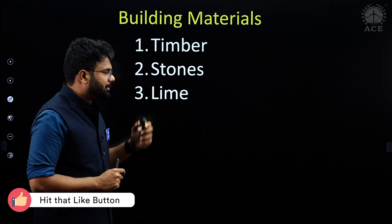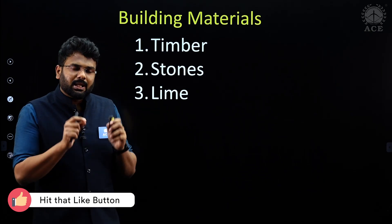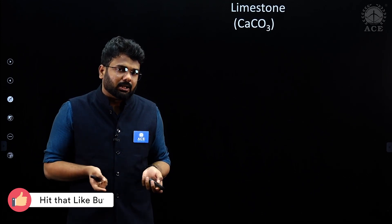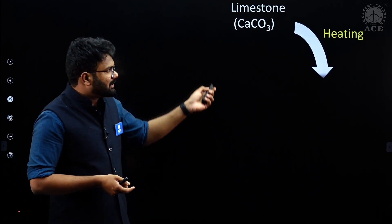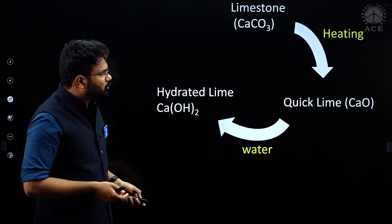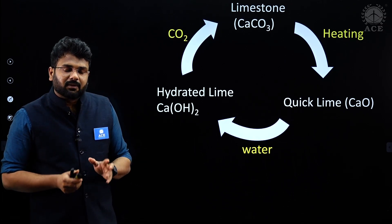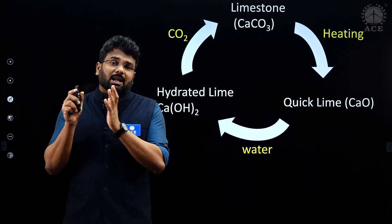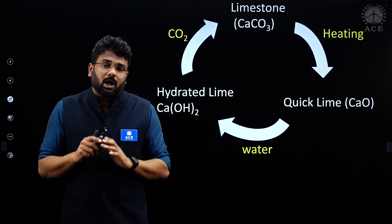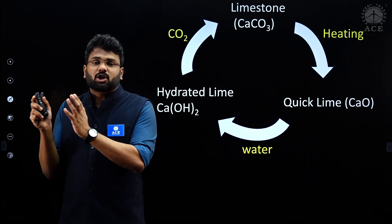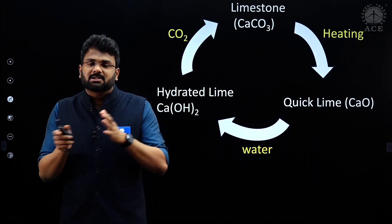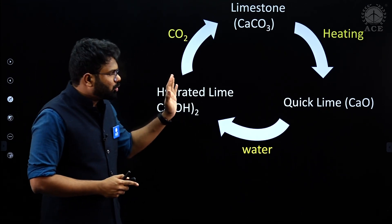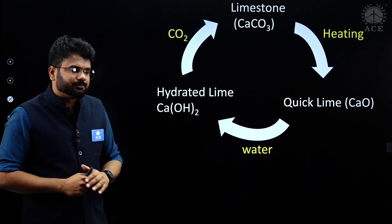After that is the lime chapter. In the lime chapter you have to understand the lime cycle, and after that we will understand what lime putti is, how it is made, and how plaster of Paris is made out of gypsum. All those things we will understand in the lime chapter.